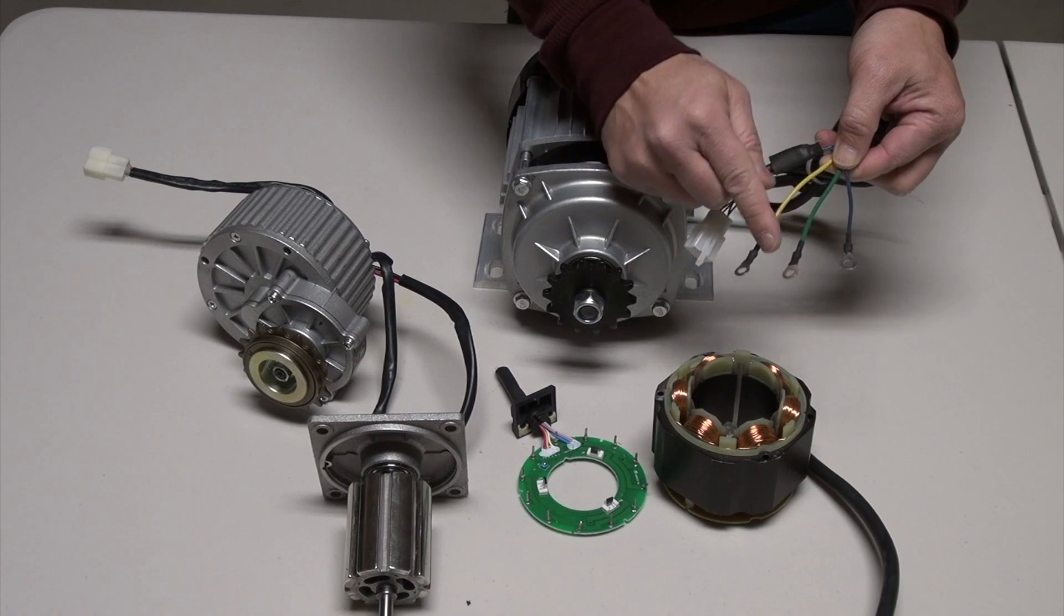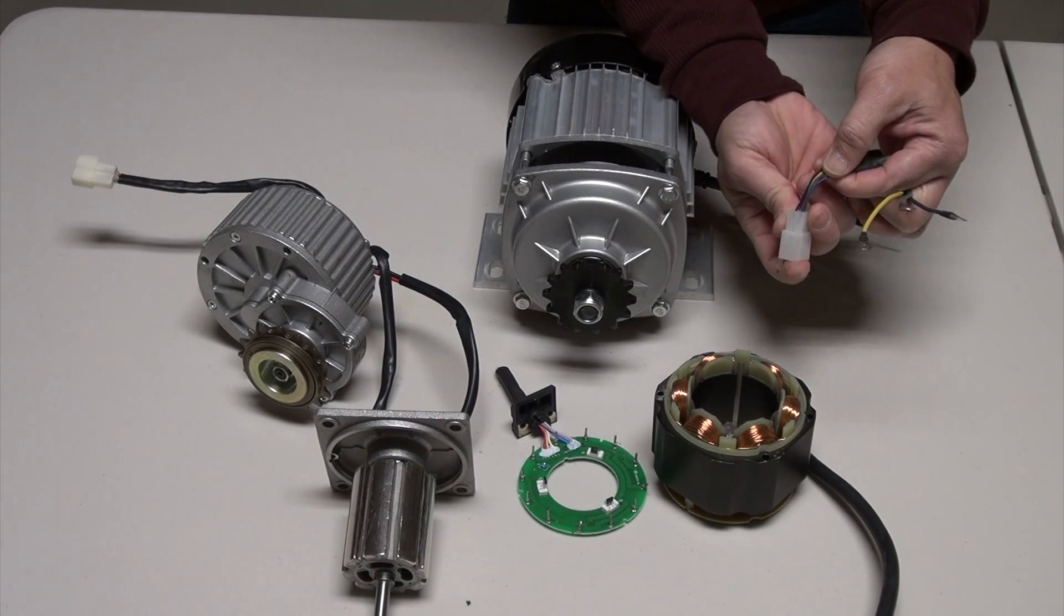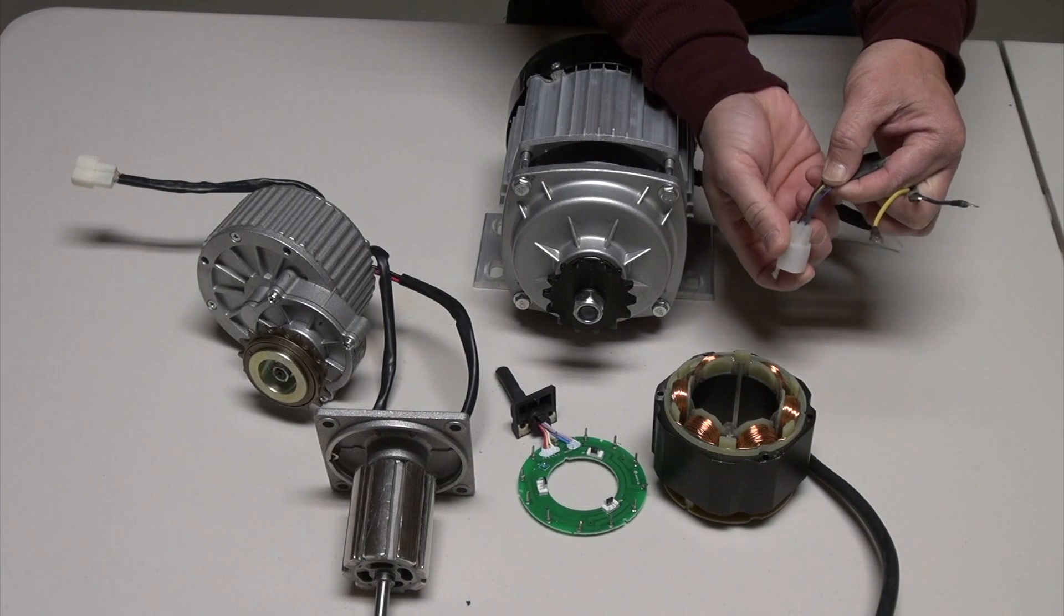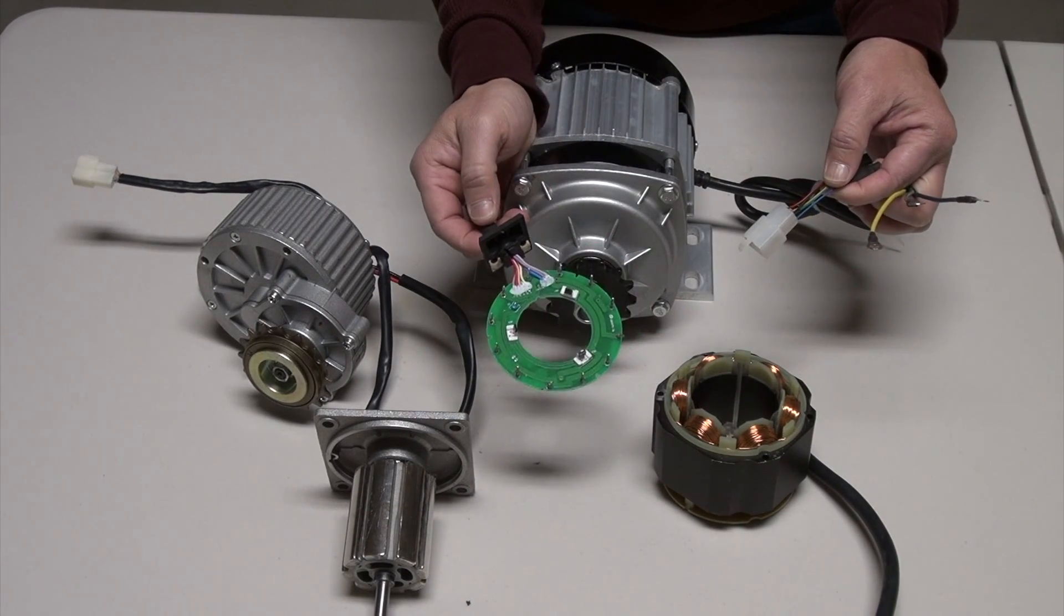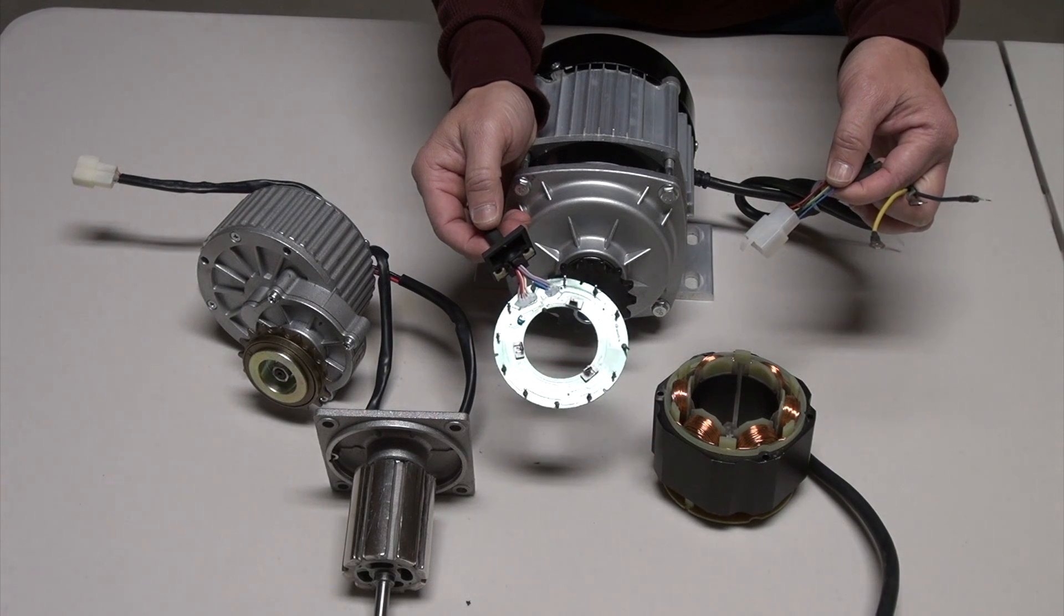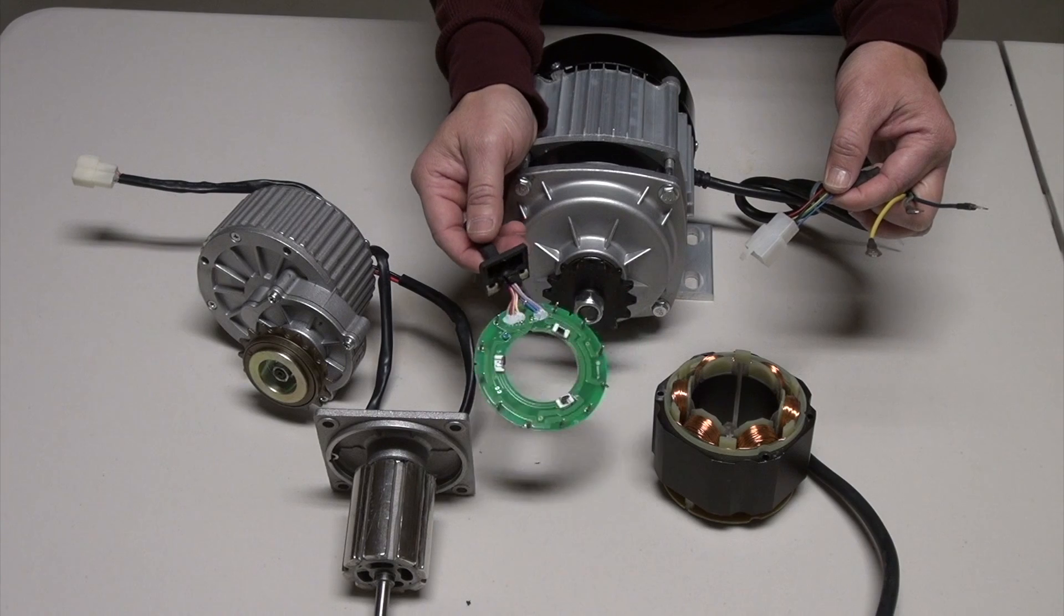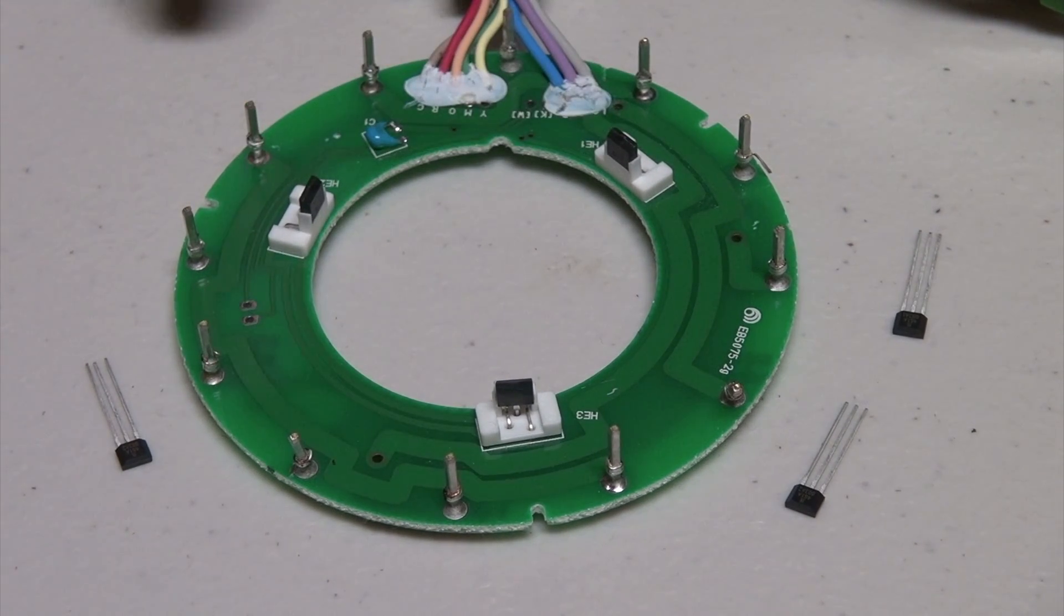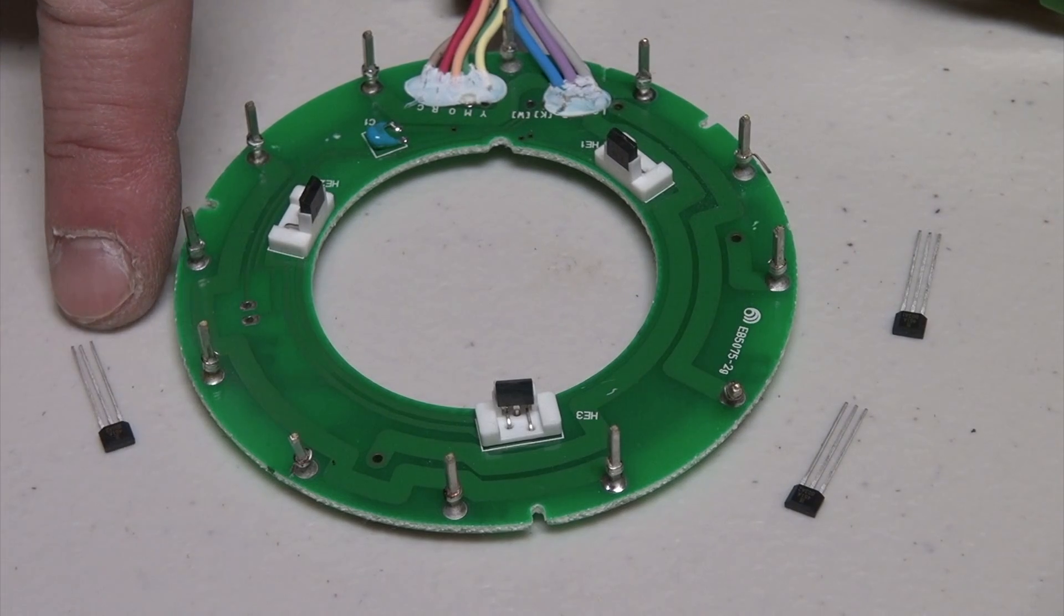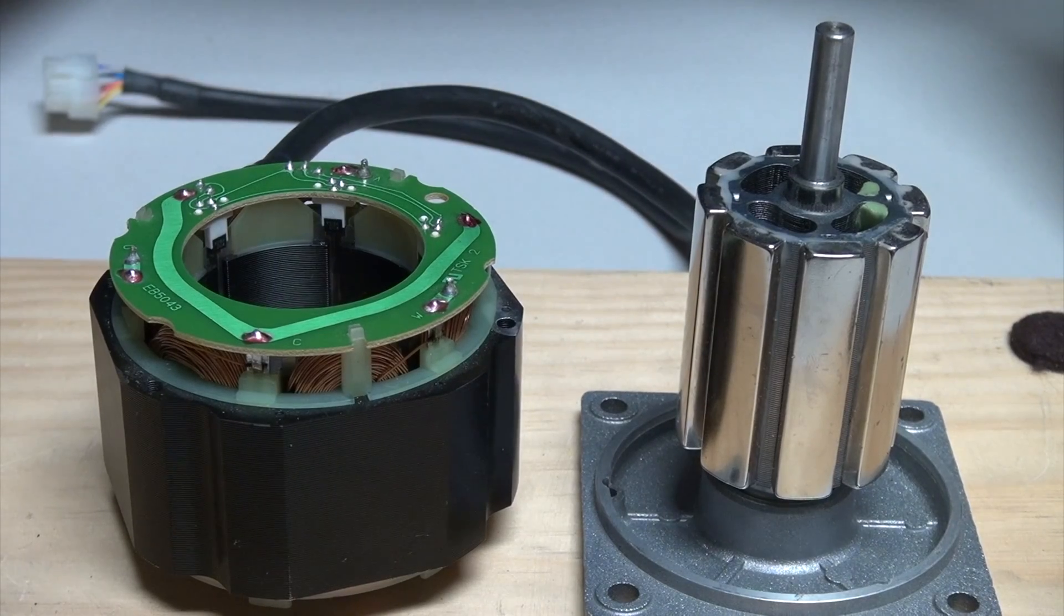You will also see these wires, these are Hall sensor wires that provide signal to the controller and release the energy needed to rotate the rotor. So these guys here are Hall sensors. When they're not part of the circuit they look like these guys here.